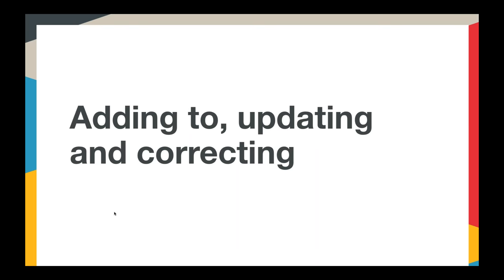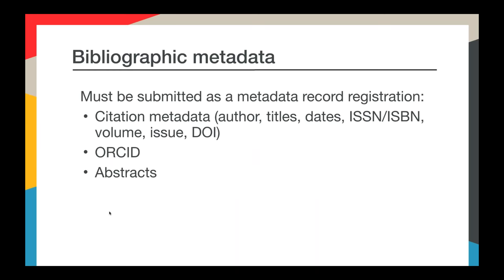If you've been registering your content with us and you've omitted or partially supplied some of this data, it's okay. I'm going to go into how to update your existing records with corrections and enhancements. When you create a record with us, the most persistent part is the identifier you register — the DOI. The rest of the record can be updated and expanded continuously. You must include bibliographic metadata and identifiers when your content is initially registered, but most non-bibliographic metadata can also be added post-registration as you're able.